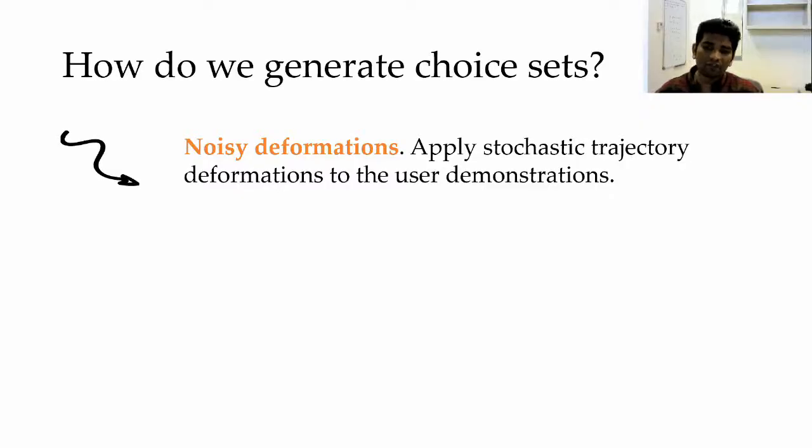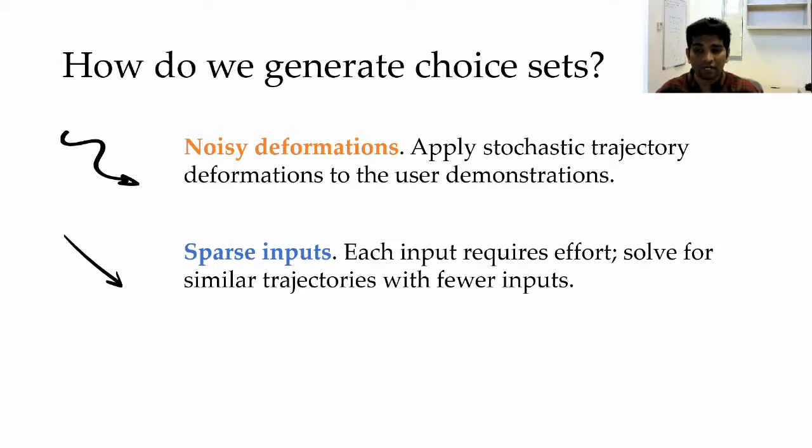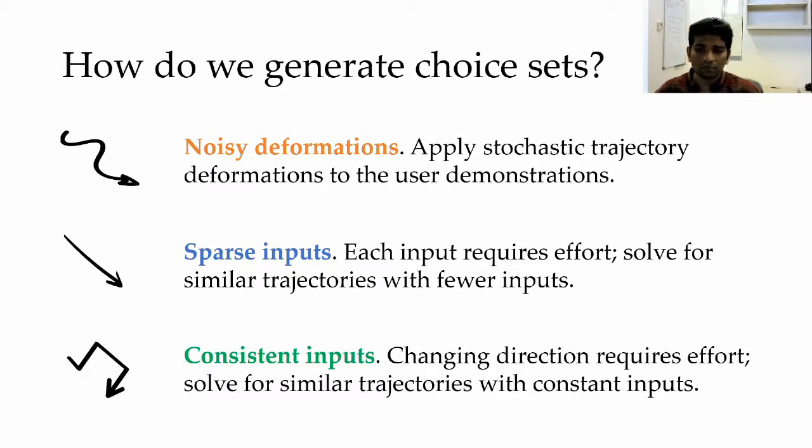So how can we generate these similar and simpler alternatives? There are many different ways, but here I'll summarize three. The first is to create noisy deformations to the human demonstration. The second is to create sparse inputs where we solve for a similar trajectory with fewer inputs. The third way is to provide consistent inputs for longer times, creating trajectories that are similar.